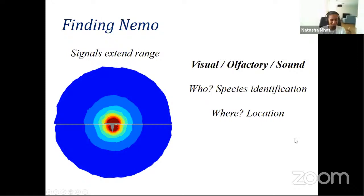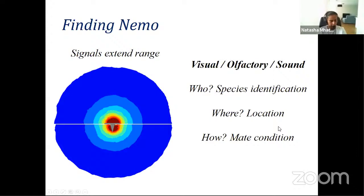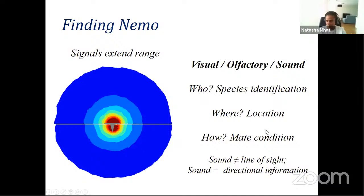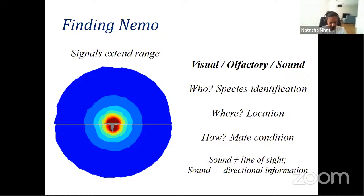Sound doesn't need line of sight — I can hear something I can't see, even if it's occluded by a tree or some other obstacle. Sound also has very strong directional information, unlike olfaction, which depends on air turbulence and can lose a lot of information about where the signal is coming from. Sound has some advantages in this case.